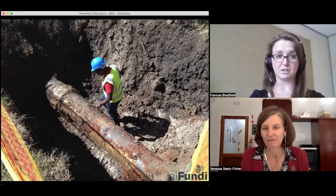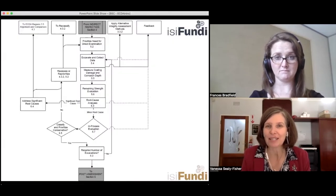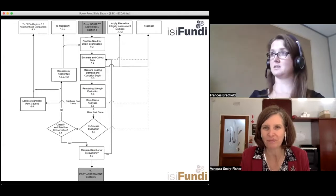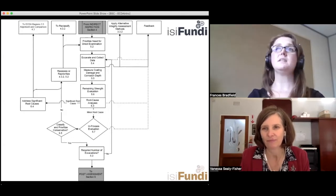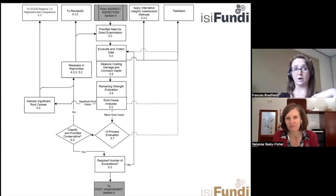NACE has done a flow chart for this section. Let's have a quick look at the flow chart and look at what we can expect in this stage. The very first thing is we need to prioritize the need for direct examination. The ECDA process sounds like something you start on a Monday and then you're digging up on the Friday, but that's not the case. These digs can go on over months—one day this month, one day next month. We want to choose the worst absolute worst case and investigate that first.